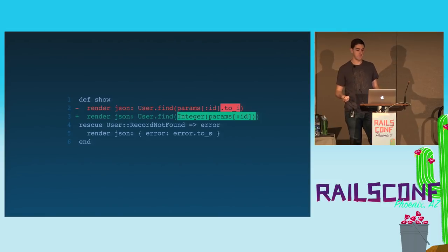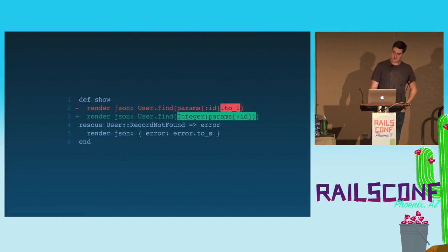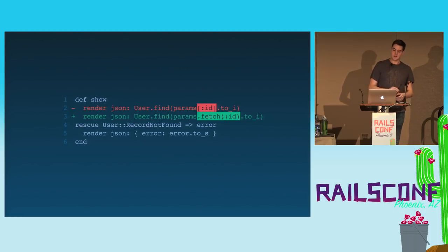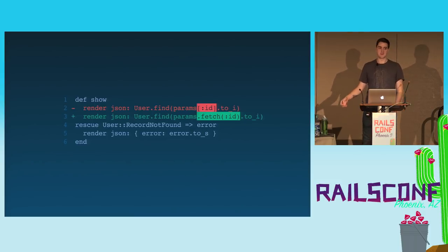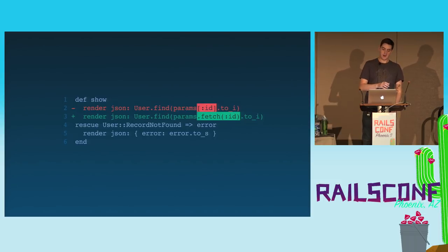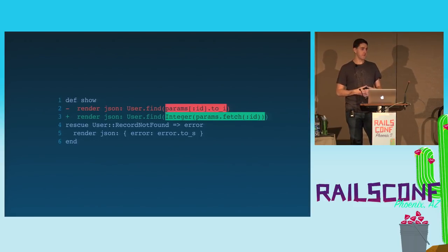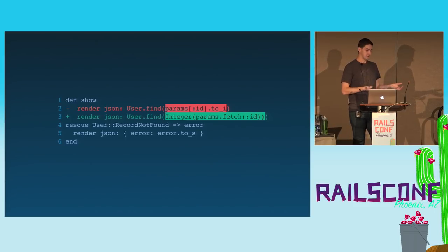The tool is also going to change the hash bracket method to hash fetch, which is a bit more strict on the presence of the key. In the original implementation, if the ID key was not there, this would silently return nil. With hash fetch, it raises an error if that key isn't there. So putting those together, our tool is forcing us to write a slightly more strict implementation — asserting the presence of the key and asserting that the ID value is actually parsable as an integer.